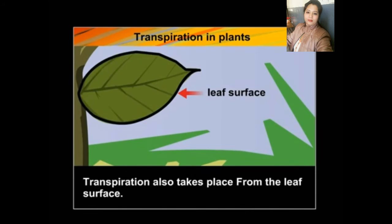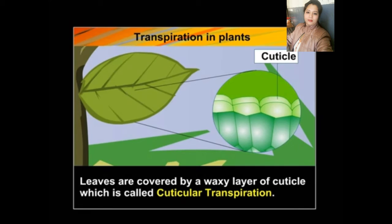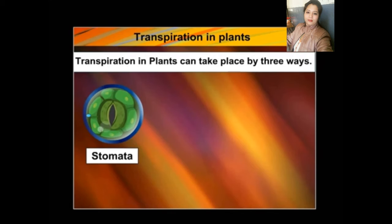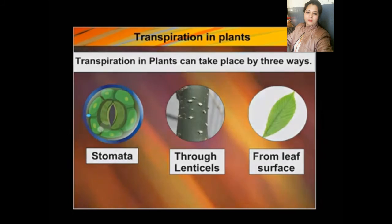Transpiration also takes place from the leaf surface. Leaves are covered by a waxy layer called the cuticle, and this is called cuticular transpiration. So transpiration in plants can take place by three ways: first through stomata, second through lenticels, and third from the leaf surface.